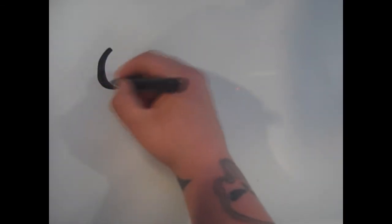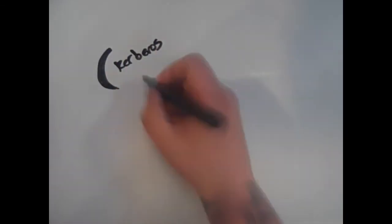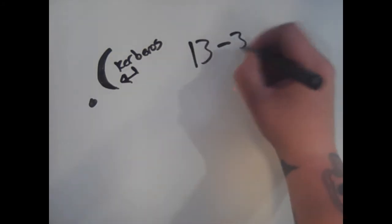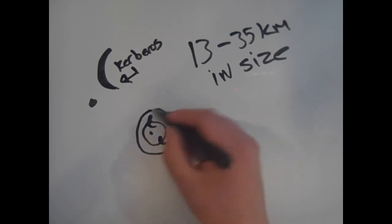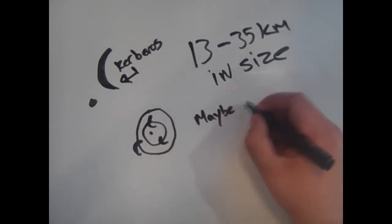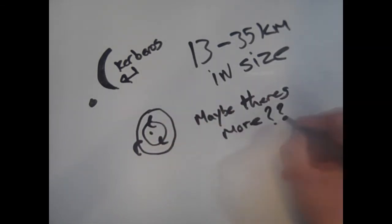An example of this is how one of Pluto's moons, Kerberos, has been estimated between 13 and 35 kilometers in size. It is quite possible that Pluto has rings or moons additional to the five we've been unable to detect so far.